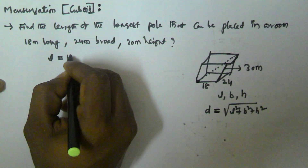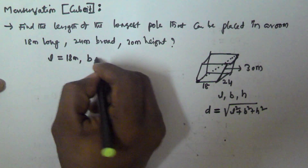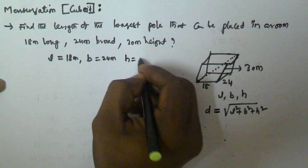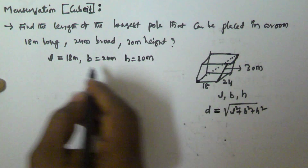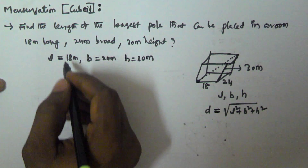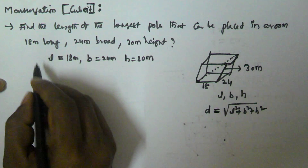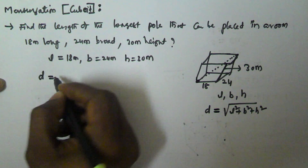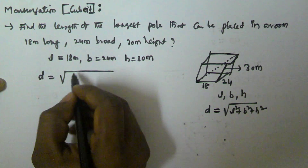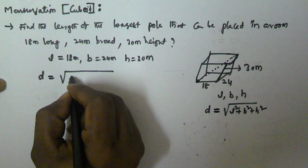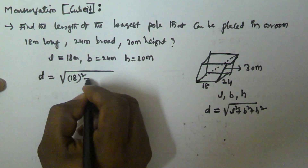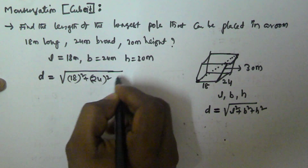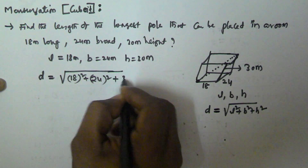So here it is given that l = 18 meter, breadth = 24 meter, and height = 30 meter. So the length of the longest pool that can be placed in the room is equivalent to the diagonal d, which is equal to √(18² + 24² + 30²).